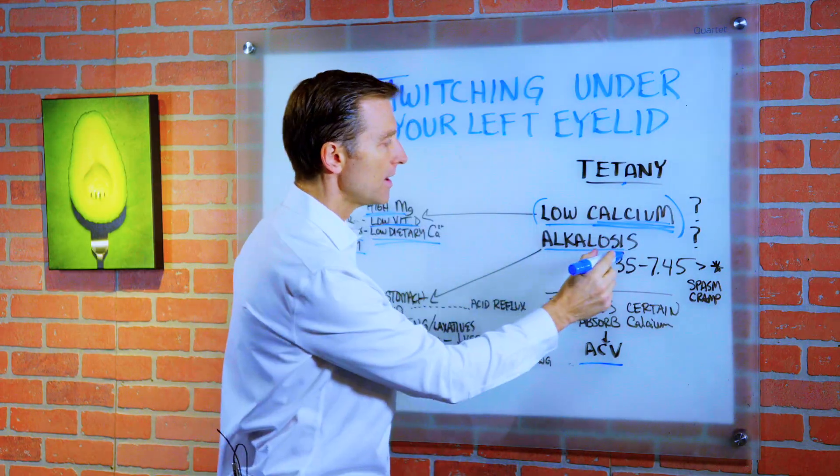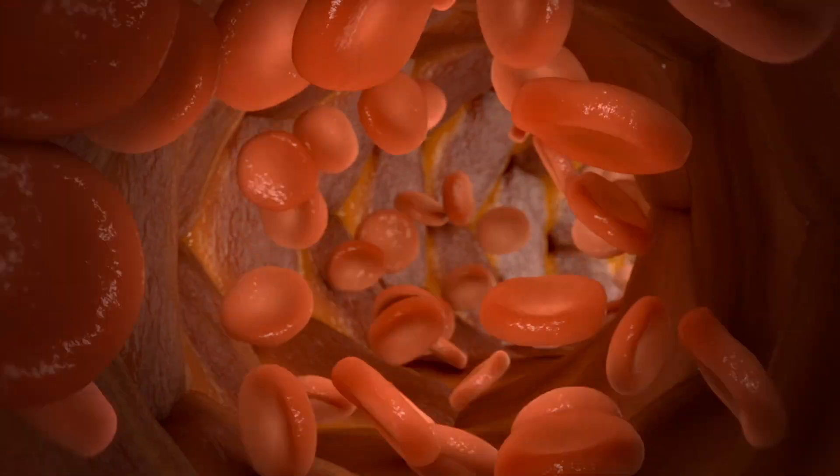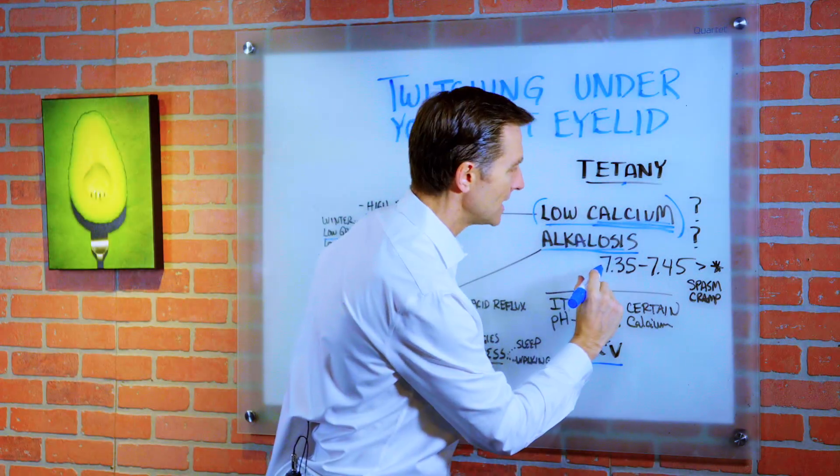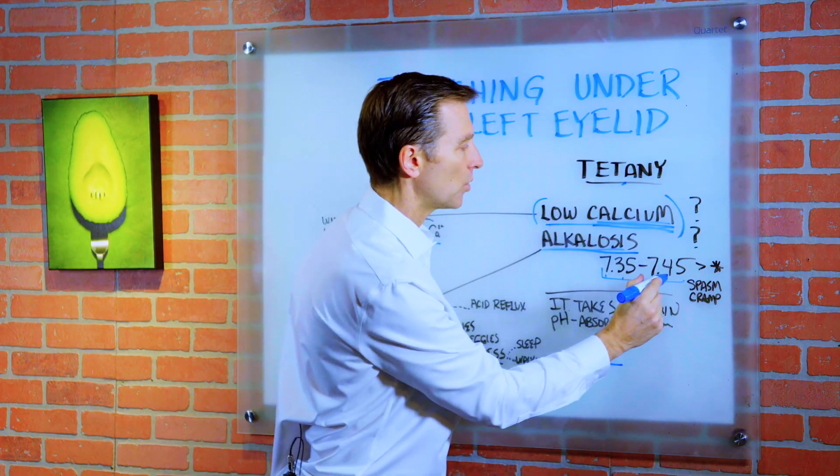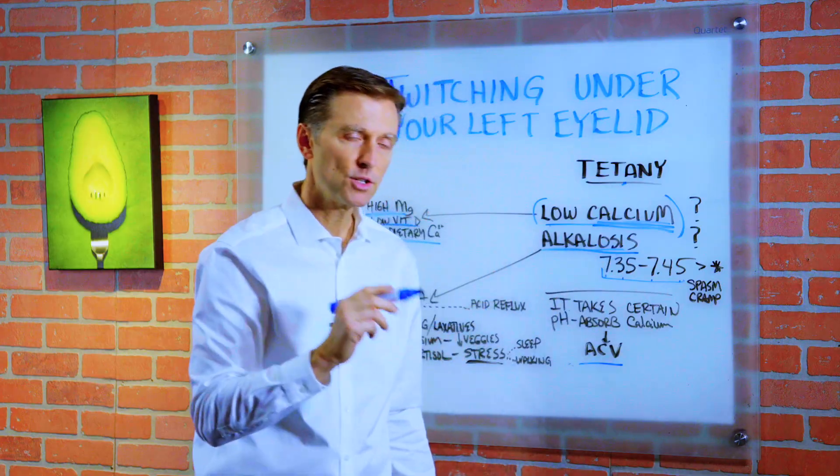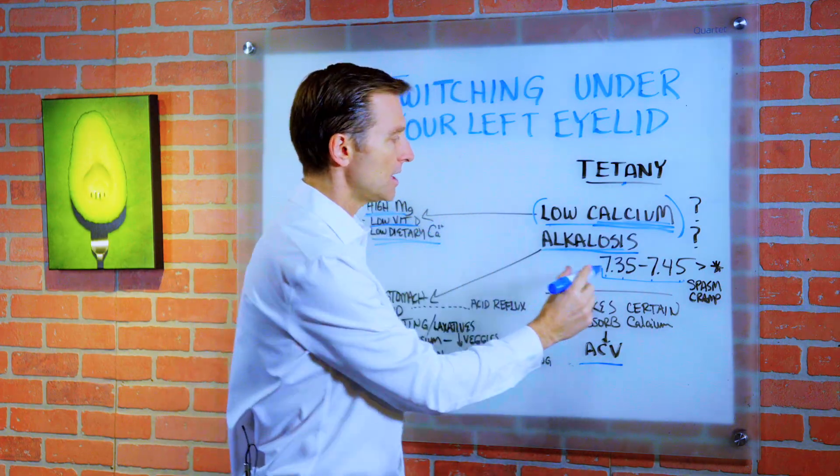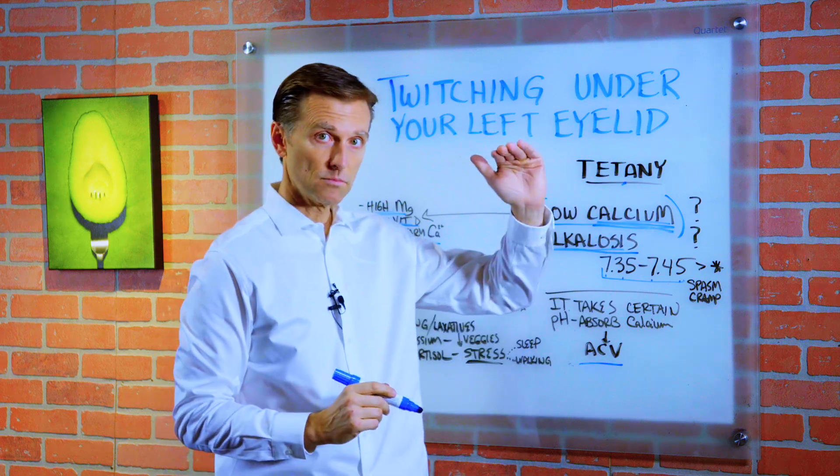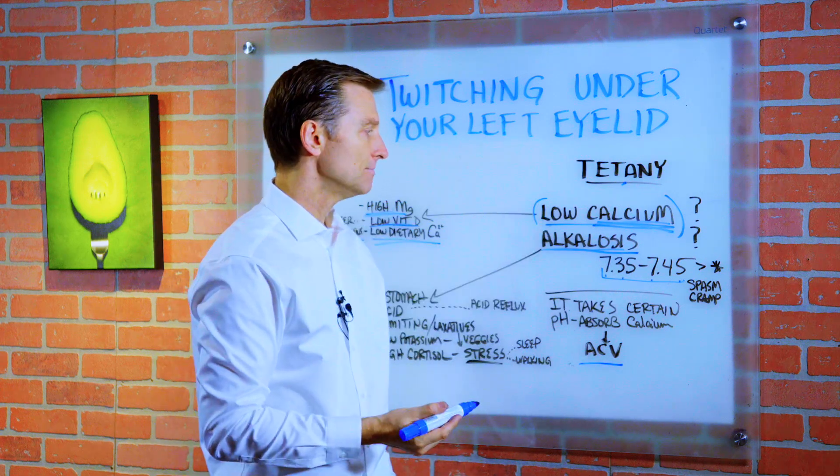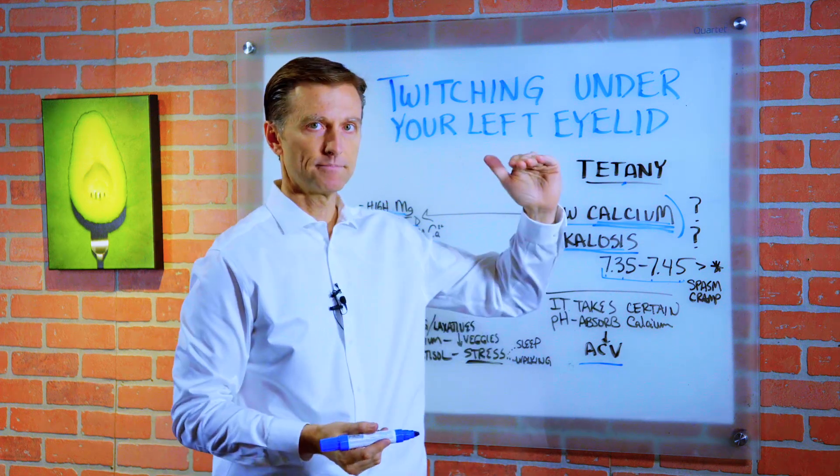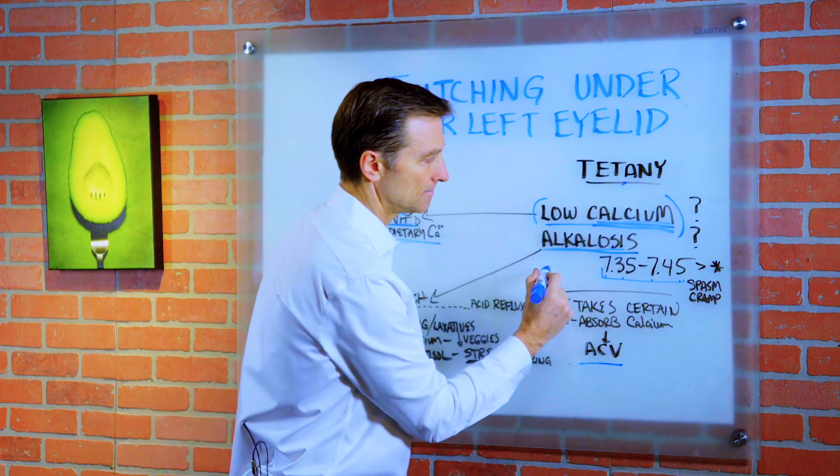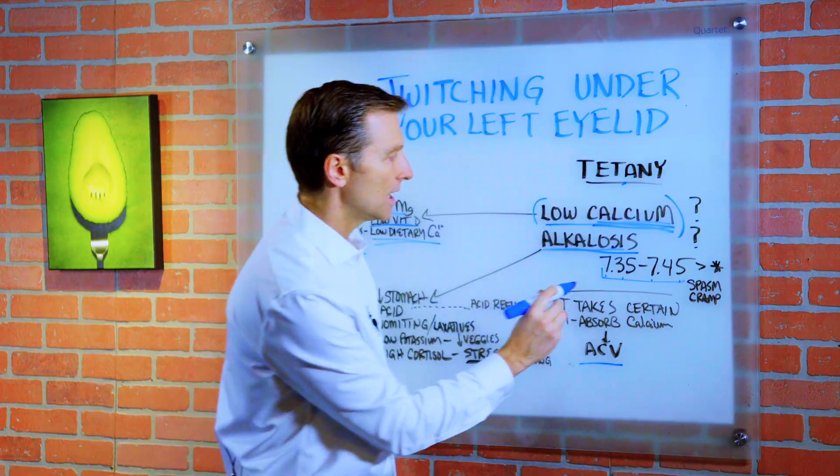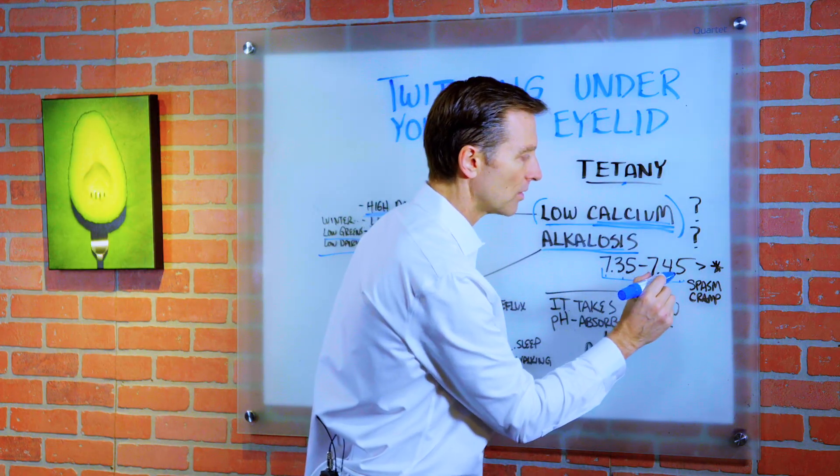Now, what about this thing alkalosis? Normally, the pH of the blood is within a very narrow range between 7.35 and 7.45. 7 being neutral. And when you go up in numbers above neutral, greater than 7, you're getting more alkaline. Anything below 7, you're going more acid.